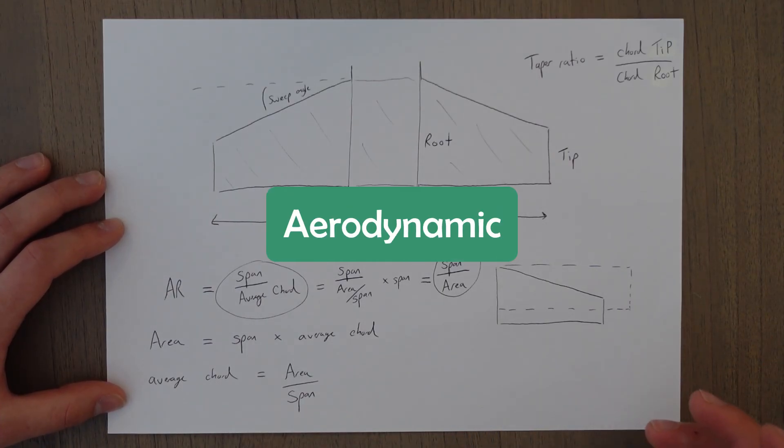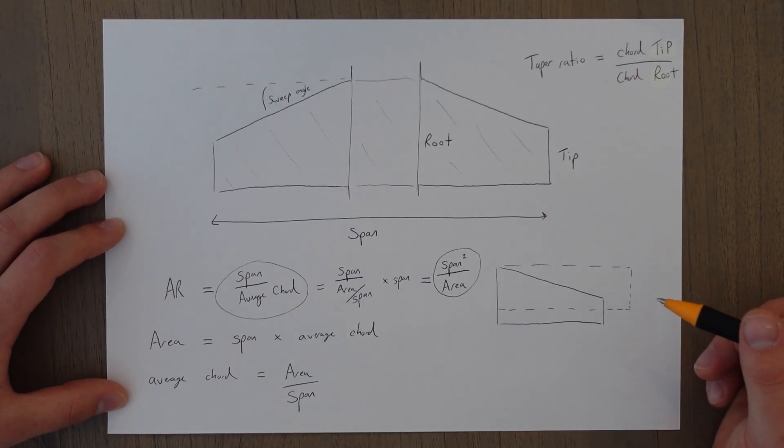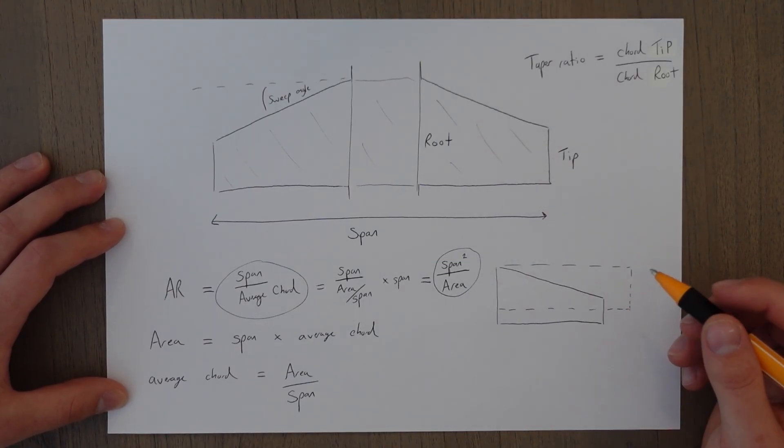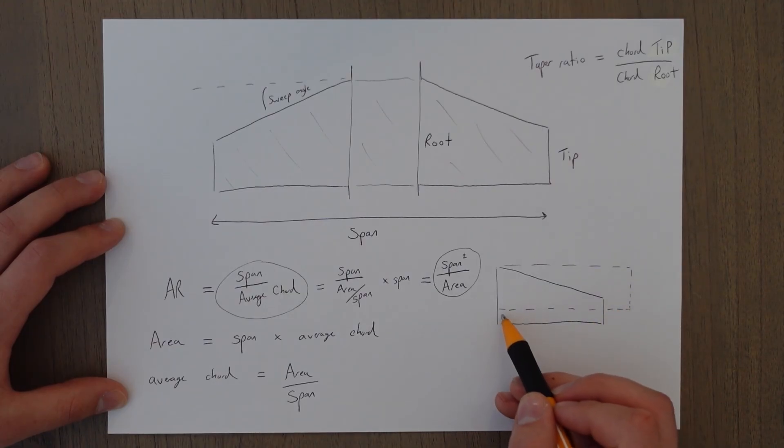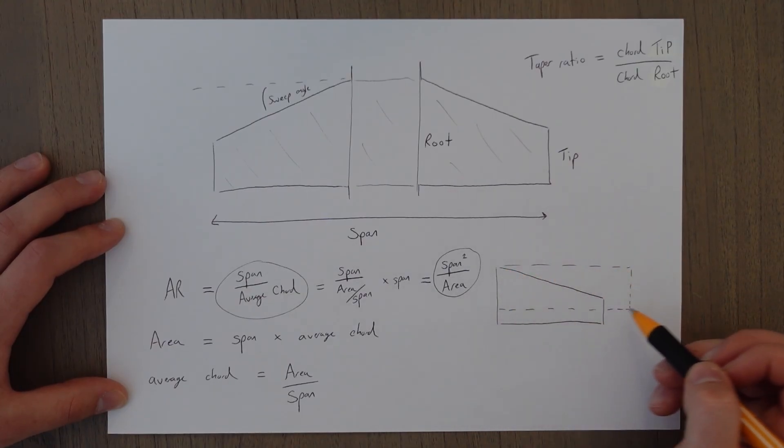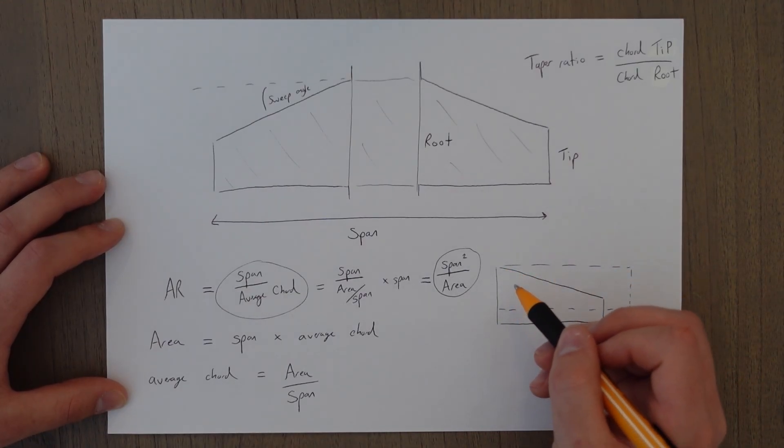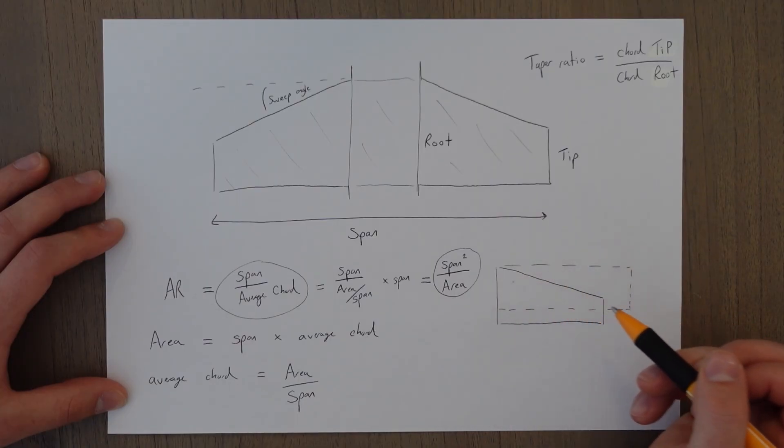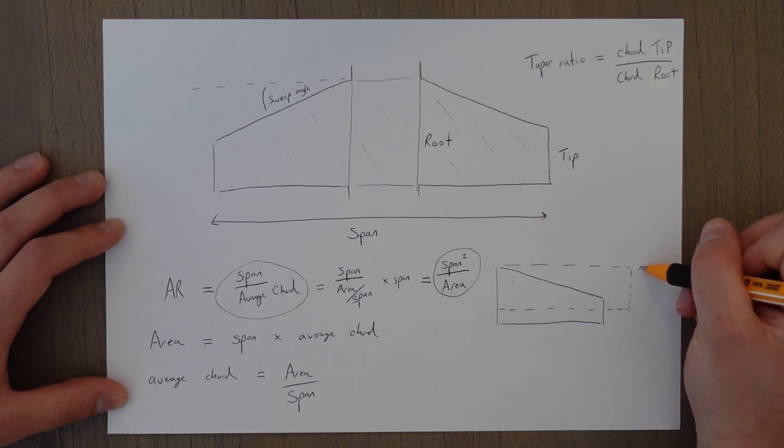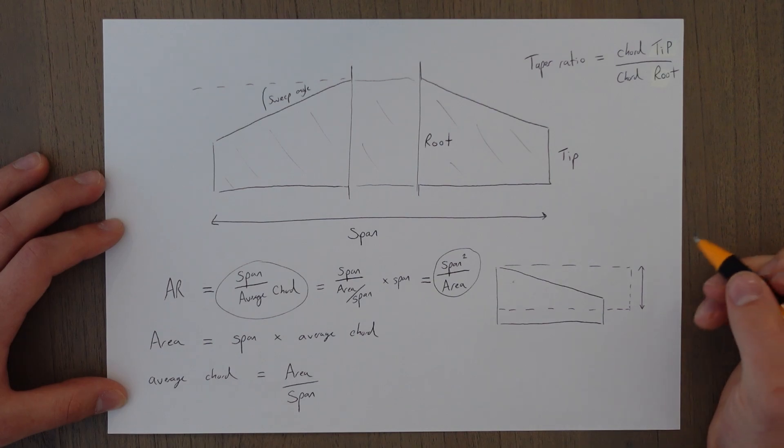The MAC or the mean aerodynamic chord is derived from the mean aerodynamic wing. The mean aerodynamic wing is an equivalent wing that is perfectly rectangular that has exactly the same properties as this swept back tapered wing. And then your average chord along that length is always the same because it's rectangular and from there you derive your MAC or your mean aerodynamic chord.